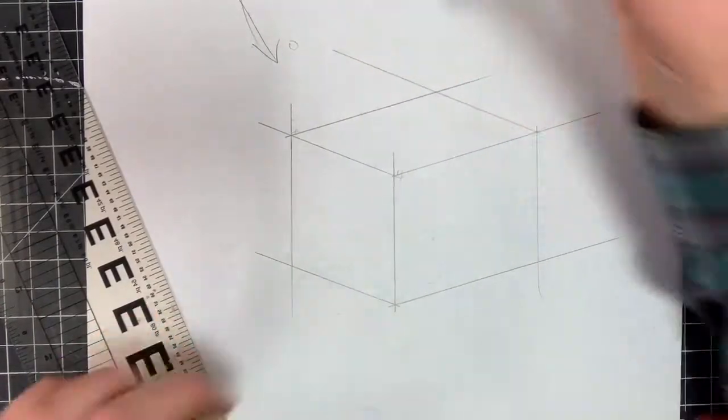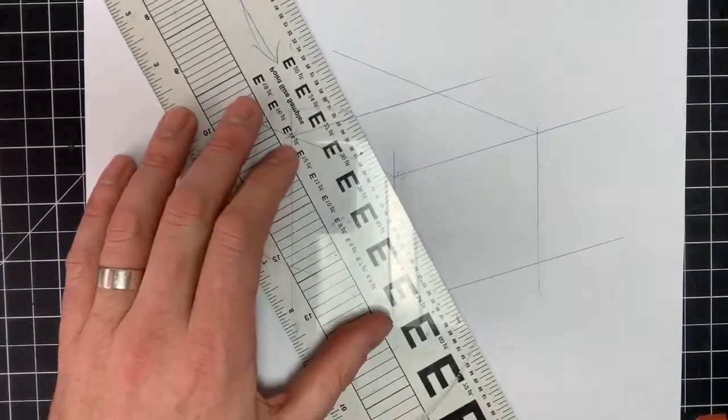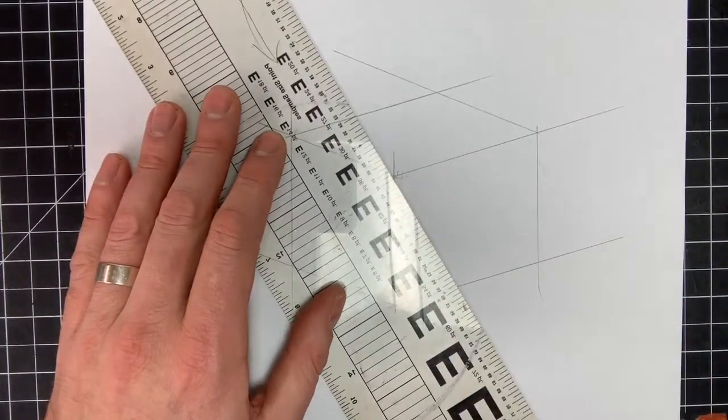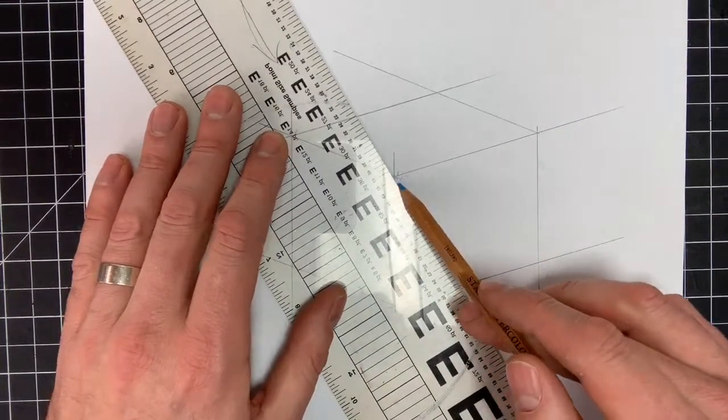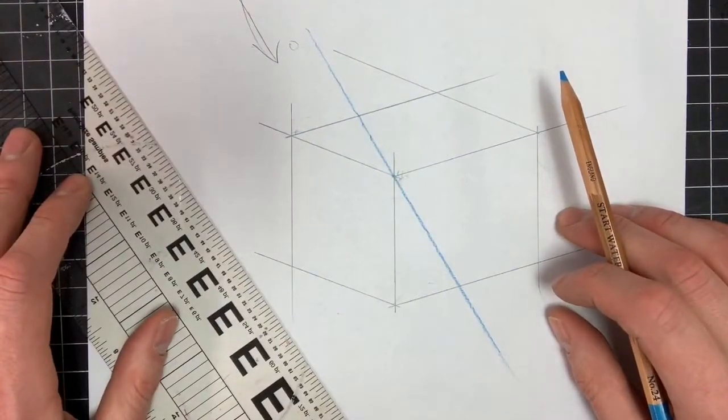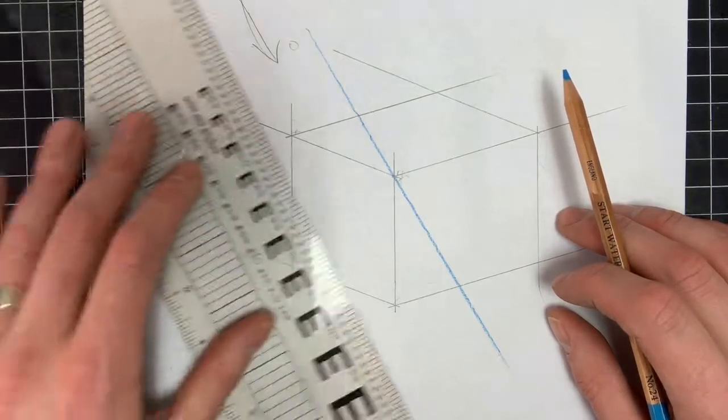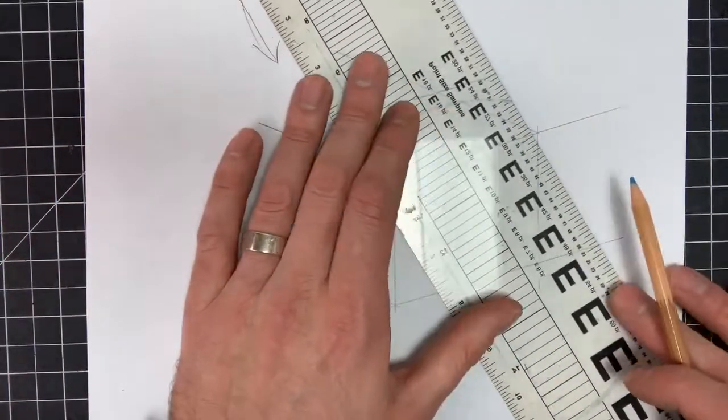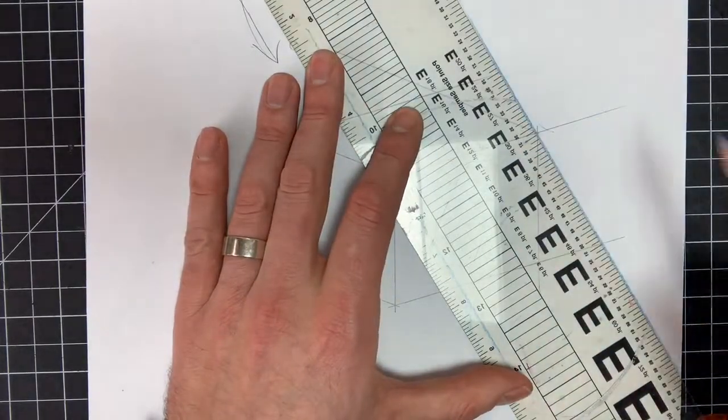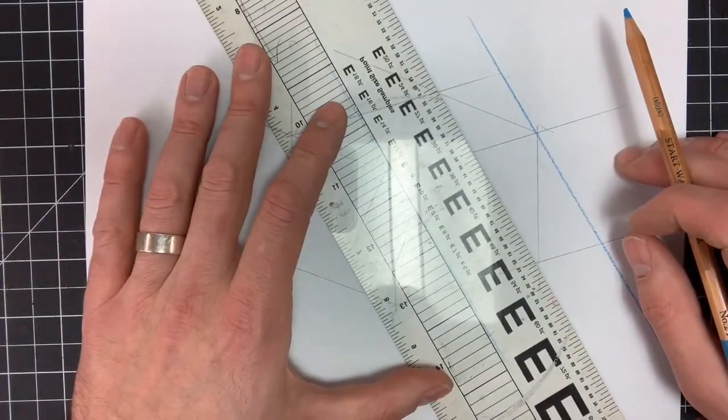This diagonal is important because I'm going to use that diagonal to cast the shadow. So I'm going to draw a line using my blue pencil from this corner down. And then from this corner down and this back corner down.